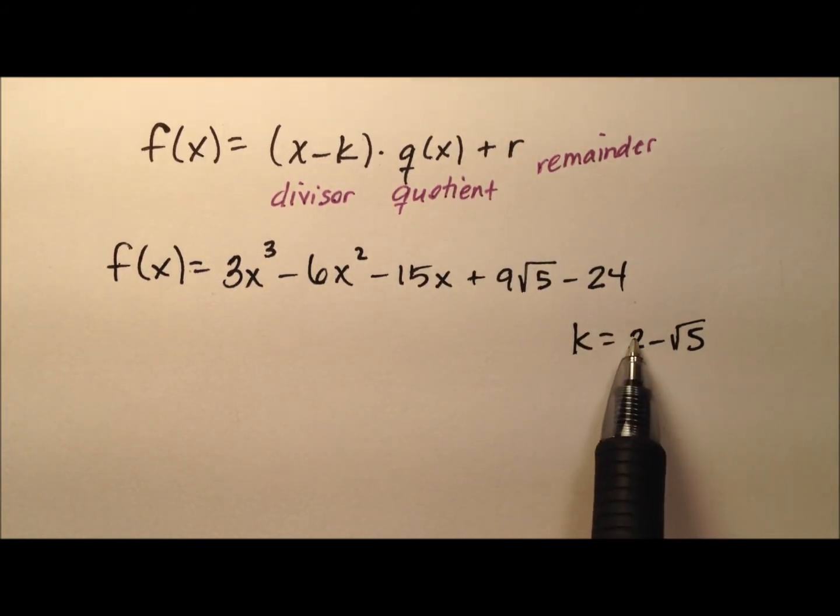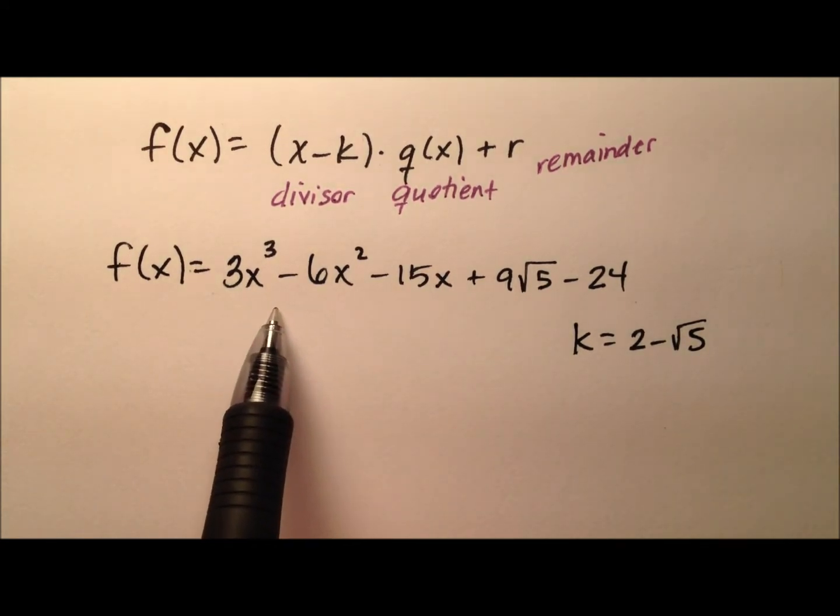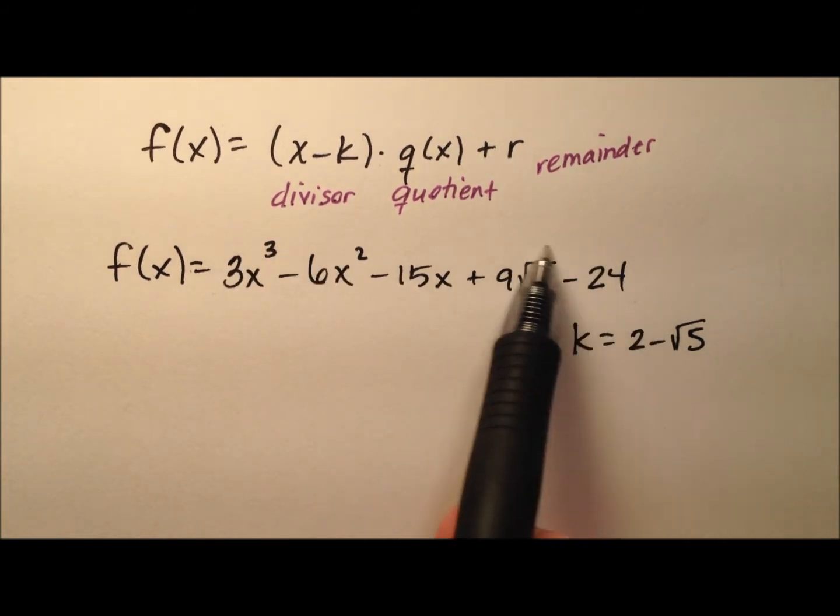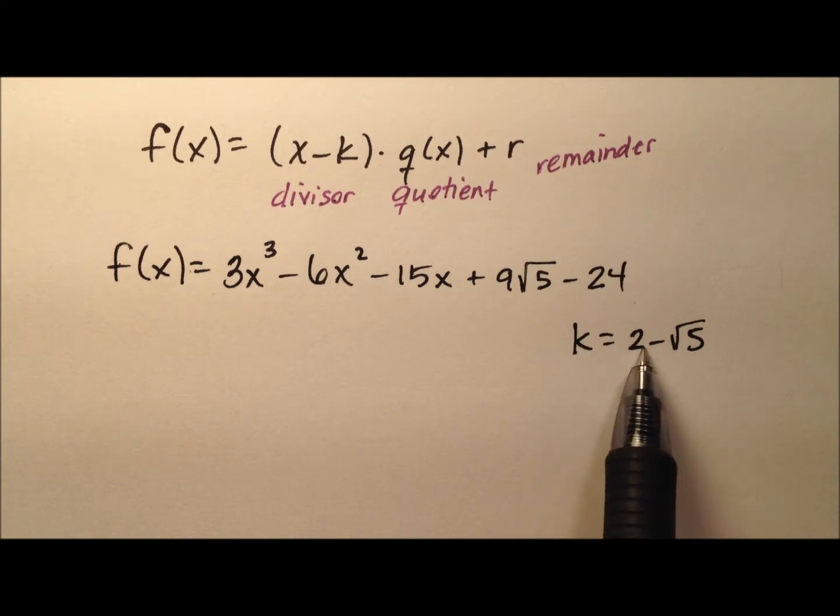So the k value that we're given is 2 minus the square root of 5. So we're going to use synthetic division. We're going to work this division process taking this polynomial function f of x, dividing it by x minus k, so our k value was given here, and then we'll see what we have.